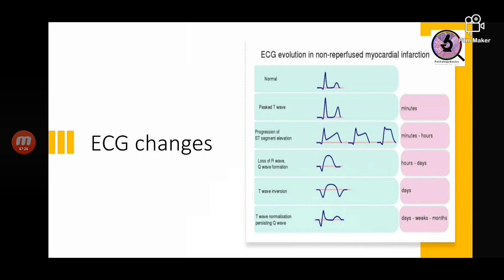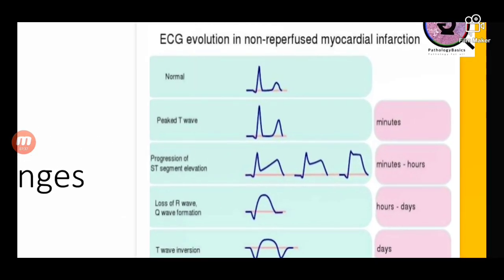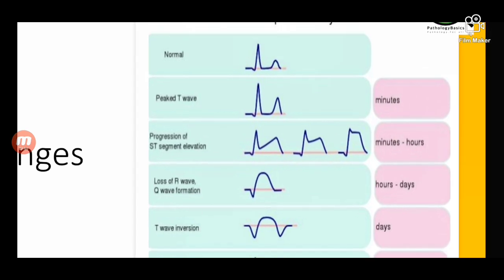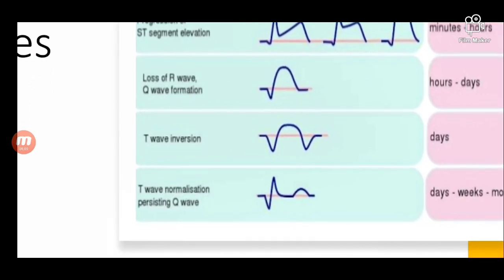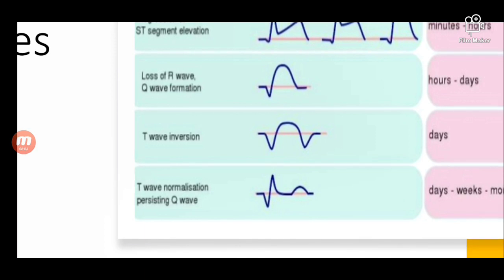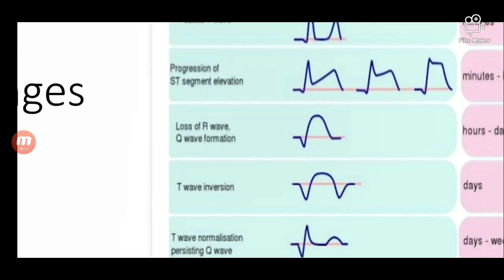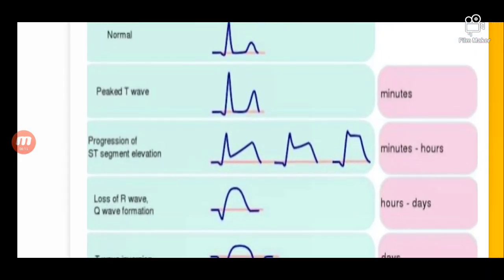Regarding ECG changes for diagnosing MI: within minutes there is a peaked T wave. Within minutes to hours there is progressive elevation of the ST segment. Within hours or days there is loss of the R wave and Q wave formation. After that the T wave becomes inverted. Then there is normalization but the Q wave persists. MI is most commonly diagnosed on the basis of this ST segment elevation.